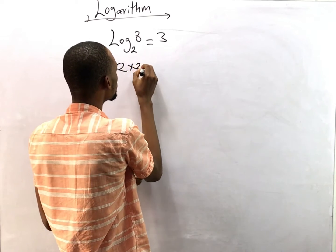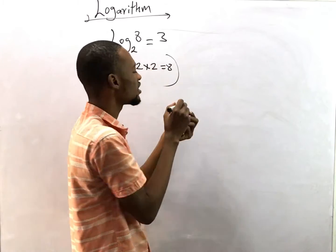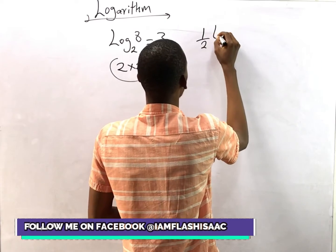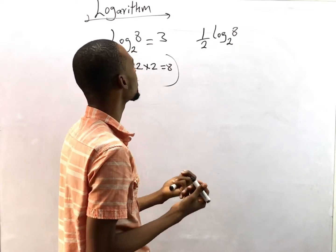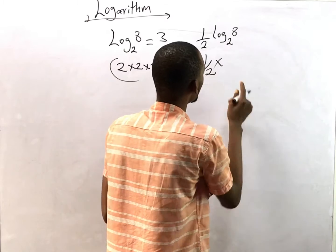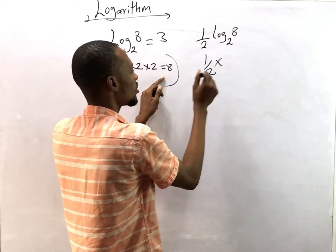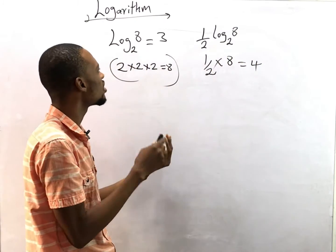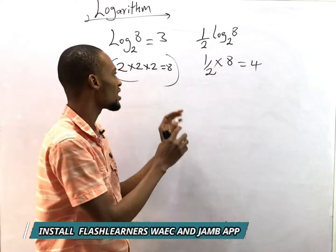This implies that we multiply 2 three times to get 8, so 2 times 2 times 2 equals 8. Now if you have something like one over two times log 8 to base 2, this is one over two times the answer, which is 3. Wait — log 8 base 2 is 3, so one over two times 3 gives you... actually log 8 base 2 is 3, and one over two times log 8 base 2 gives you four. That's what log is about.